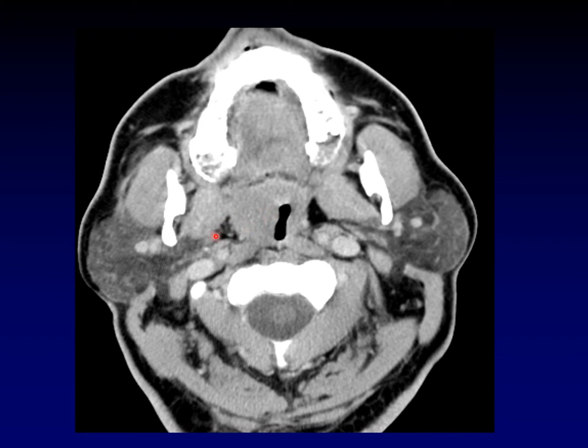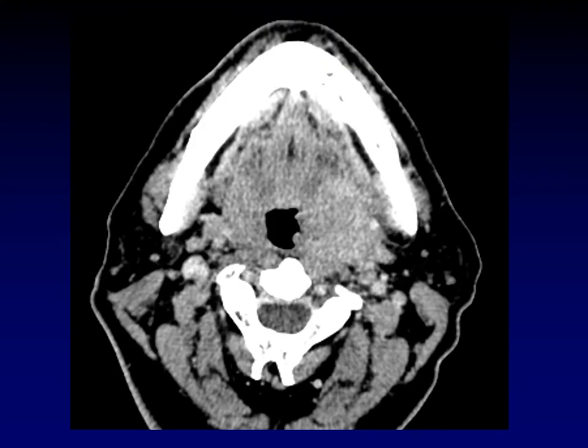Again, note the relationship to the parapharyngeal fat — it's pushing it out laterally. Now here is a tricky case: a uniformly enhancing mass within the tonsil itself, but this is squamous cell carcinoma. It's important to remember that an uncommon presentation of a common disease is more common than the characteristic appearance of an uncommon disease. Squamous cell carcinoma must be on your differential when dealing with a tumor in the lateral pharyngeal space, even if it looks like a lymphoma, because squamous cell carcinomas are so much more common.